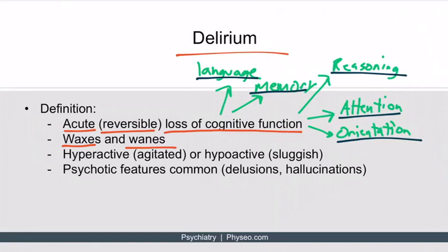Delirium can take on a hyperactive form, where the patient is agitated, or a hypoactive form, where they're sluggish — basically slow and nearly asleep. So on one end they can be very slow, and on the other they can be throwing things and threatening staff. Lastly, psychotic features are common to delirium, such as delusions and hallucinations.